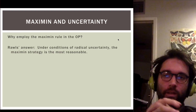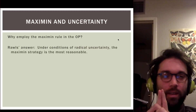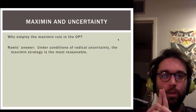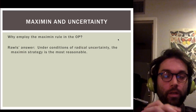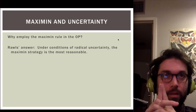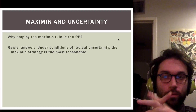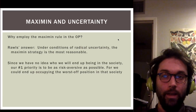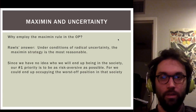The reason for employing the Maximin rule is that we're under conditions of radical uncertainty, given the way the original position and veil of ignorance have been deliberately set up. We don't know who we're going to be in society. Under such conditions, the most reasonable rule to rely on is one that maximizes the position of the one in the worst-off position. Since we've got no idea who we'll end up being, our number one priority is to be as risk-averse as possible — because we could end up occupying that worst-off position.